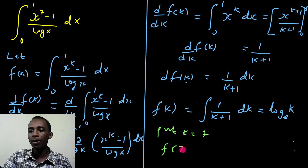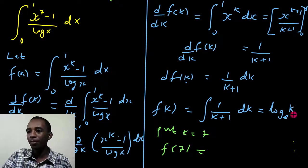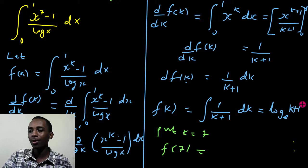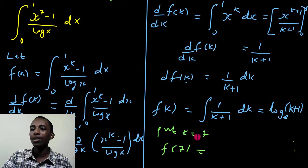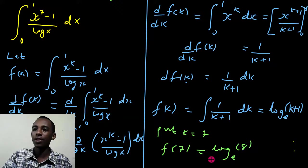I'll have f of 7 equals, oh, this must be k plus 1. Is that so? Yeah, sure. So that's k plus 1. Sorry about that. Okay. So f of 7 is log of 7 plus 1, which gives us 8.